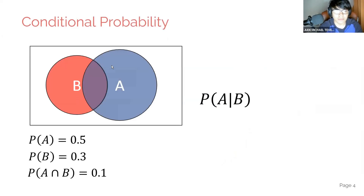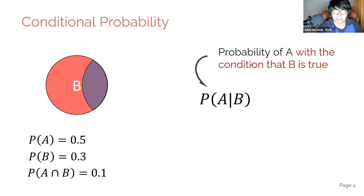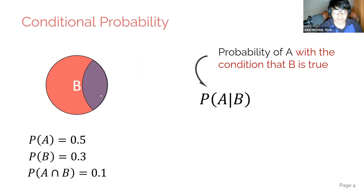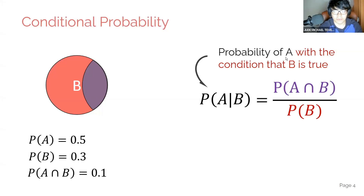This is about conditional probability. What's conditional probability? It's essentially the probability of this set, given that we're looking at this set. We're looking at the probability of this purple shape here inside set B. We can rewrite it as the probability of the intersection of A and B over the probability of B.